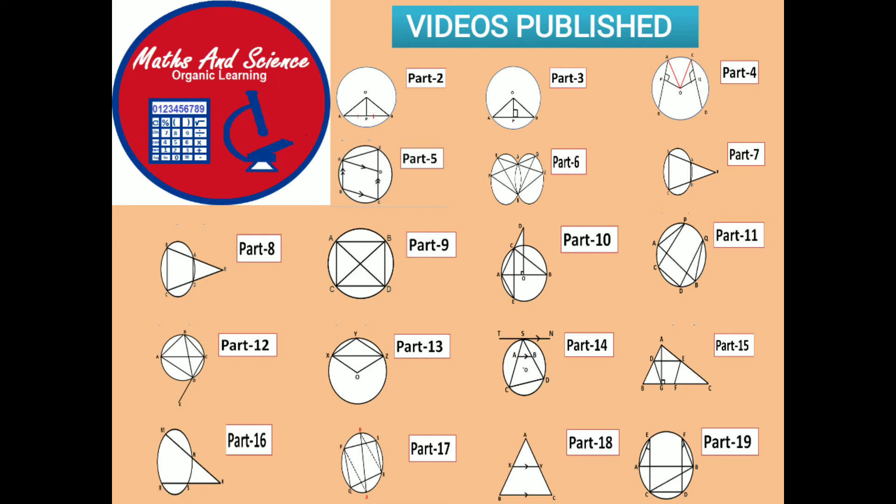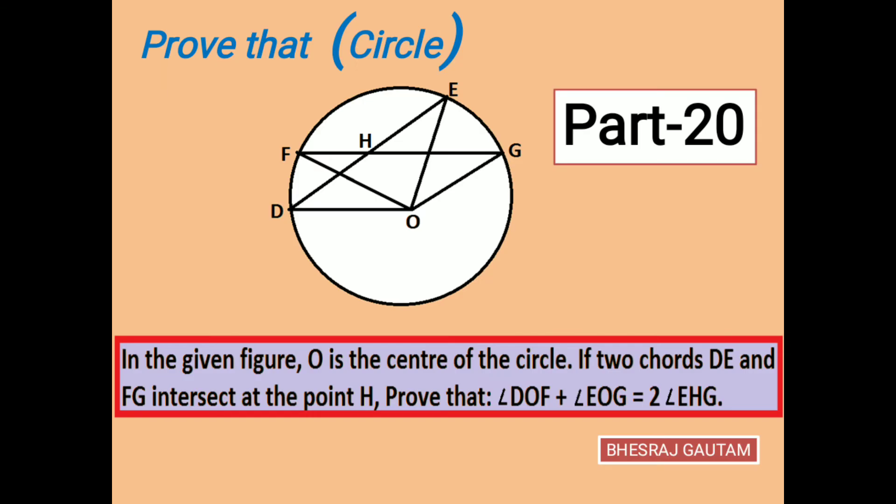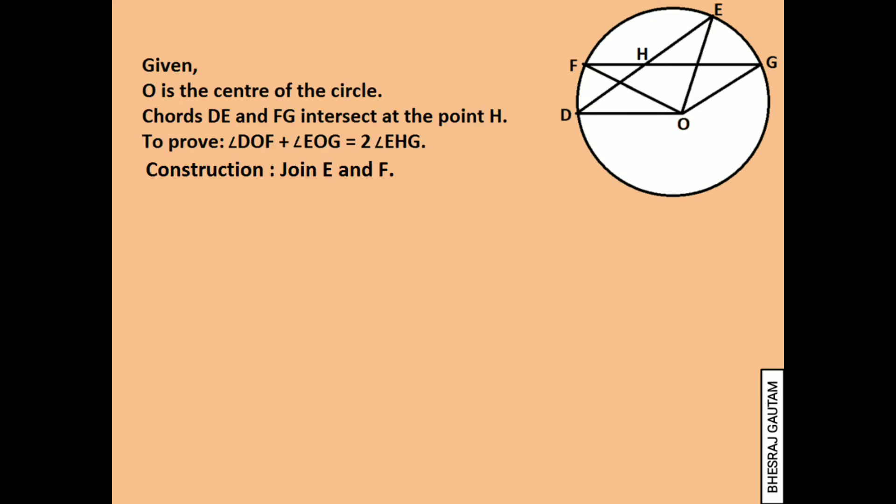In today's question we will prove that angle DOF plus angle EOG is equal to two times the angle EHG. Our proof begins with the given diagram and provided information.